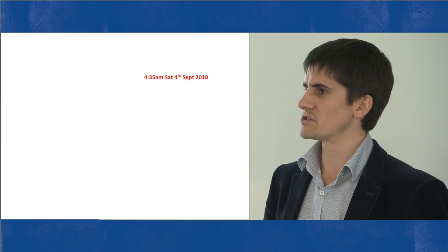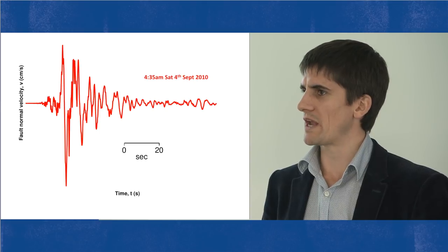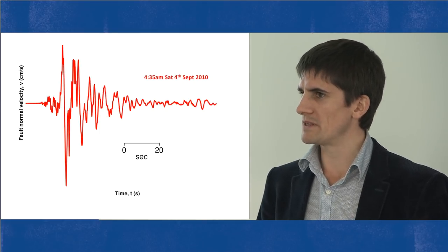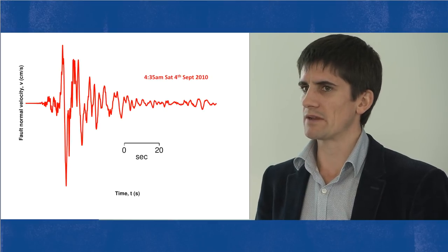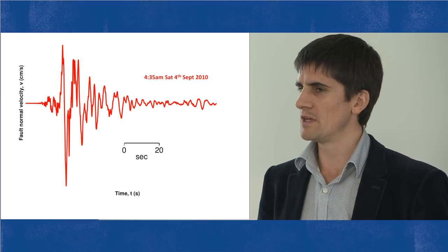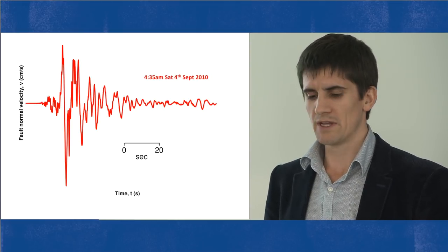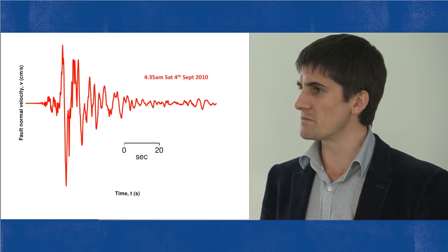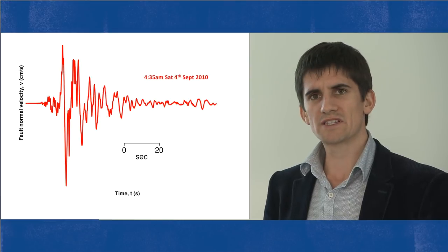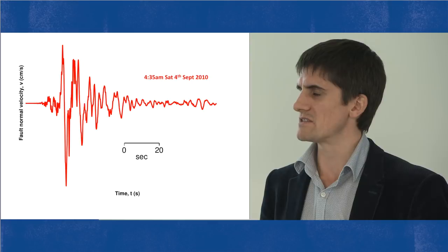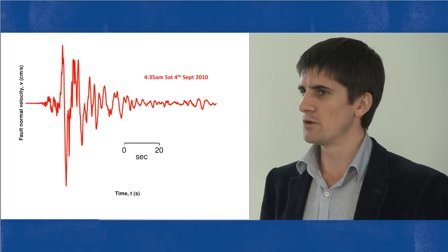One of the first things to understand is how we can predict what might happen in a future earthquake in terms of ground shaking. We develop models that allow us to both retrospectively predict what happened in the past and prospectively predict what might happen in the future. A key dataset is a ground motion record — a seismogram — recorded in central Christchurch during the 4th of September 2010 Darfield earthquake. These signals show ground velocity over time and are particularly complicated.